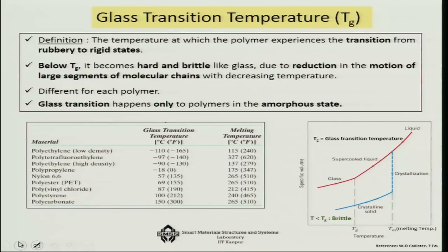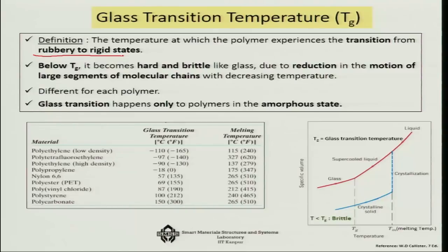The glass transition temperature changes the nature of a polymer very drastically. It is the temperature at which the transition happens in a polymer when it goes from rubbery to the rigid state. The polymer has a very long chain, and if there is enough energy in that long chain, there will be enough movement between the inter-links.